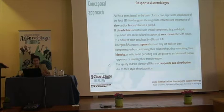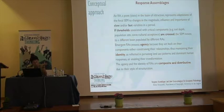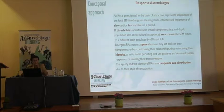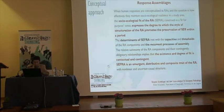If thresholds associated with a critical component — like soil depth, population size, or social acceptance — are crossed, then the system moves to a different basin populated by different response assemblages. Emergent response assemblages possess agency because they act back on their components, either constraining their relationships, thus maintaining their identity as reflected in persisting landscape patterns and dominant human responses, or enabling their transformation. The agency and identity of response assemblages, in the assemblage thinking perspective, is composite and distributive, due to their style of structuration.